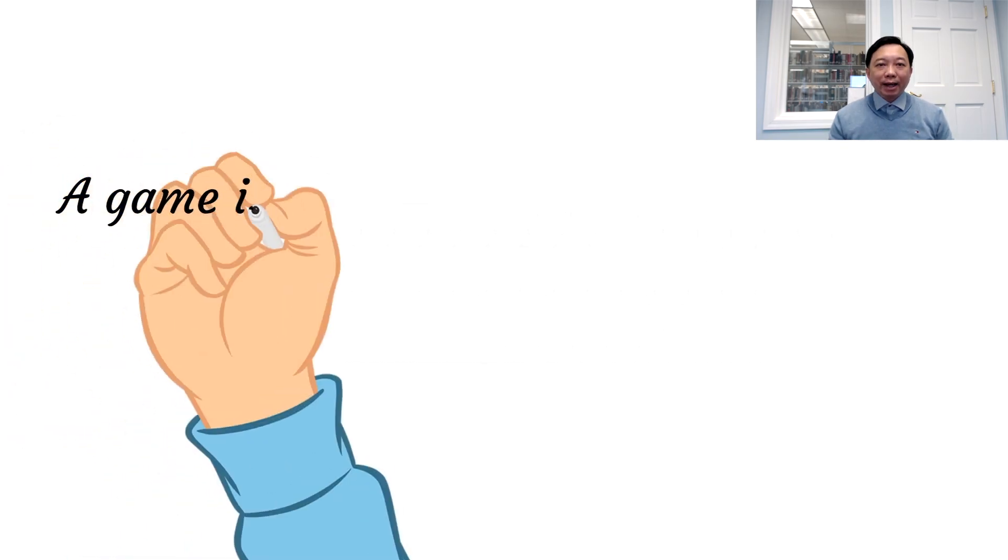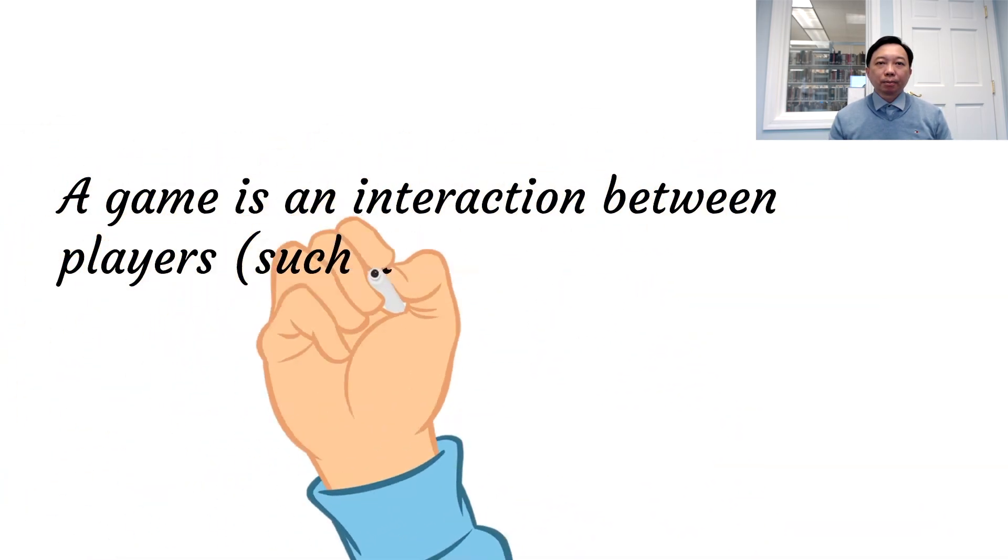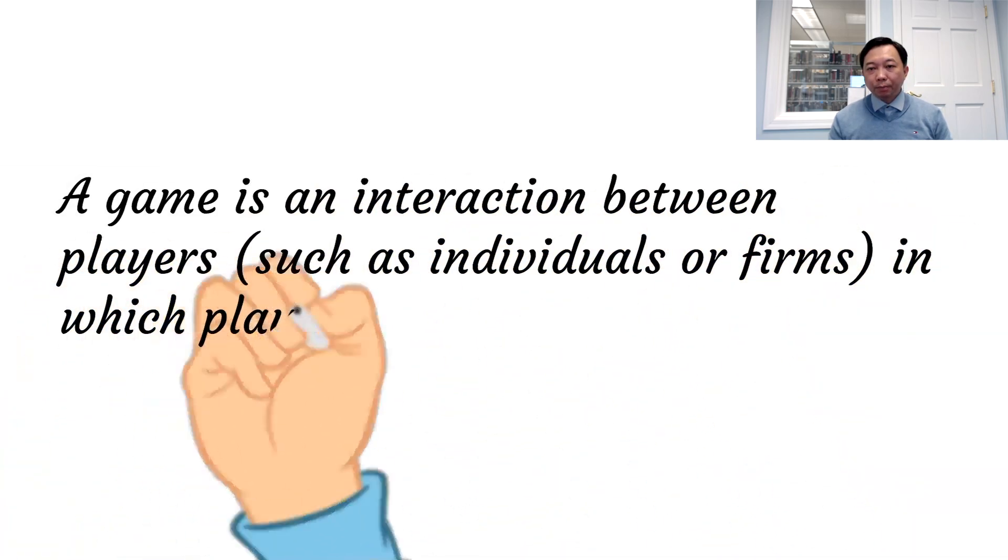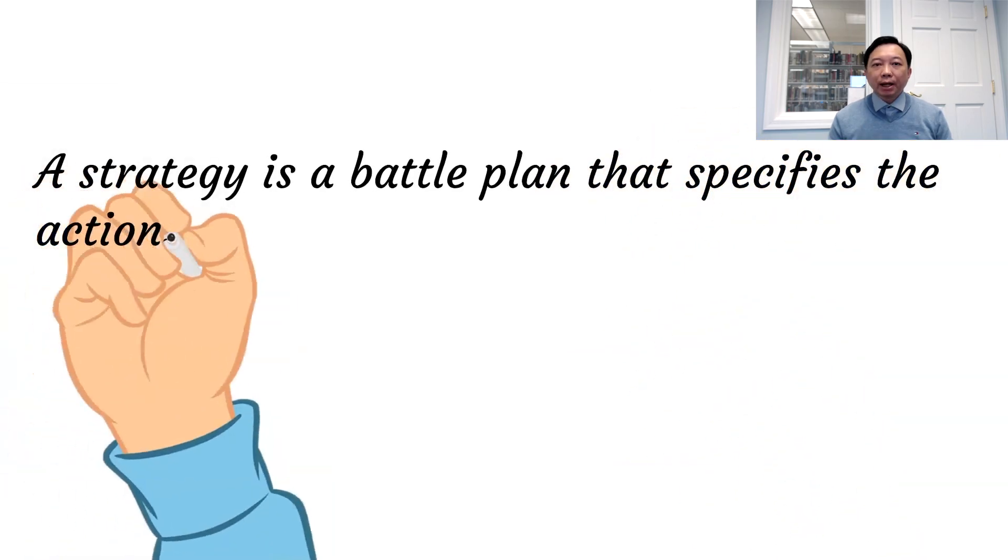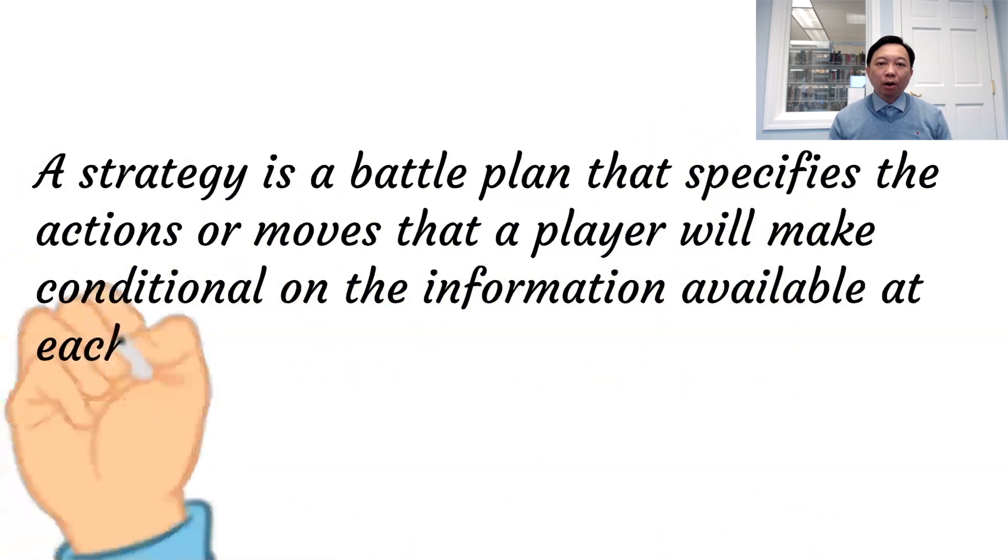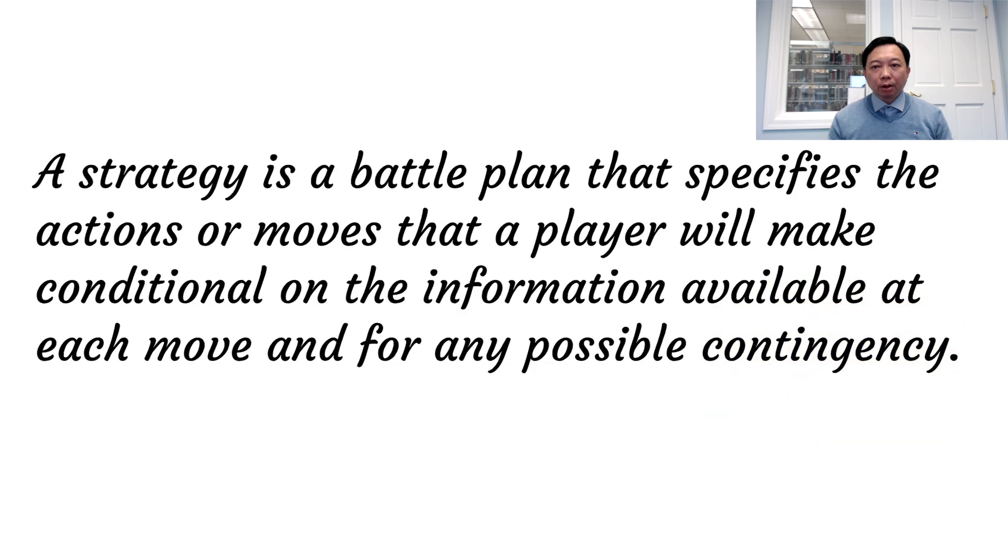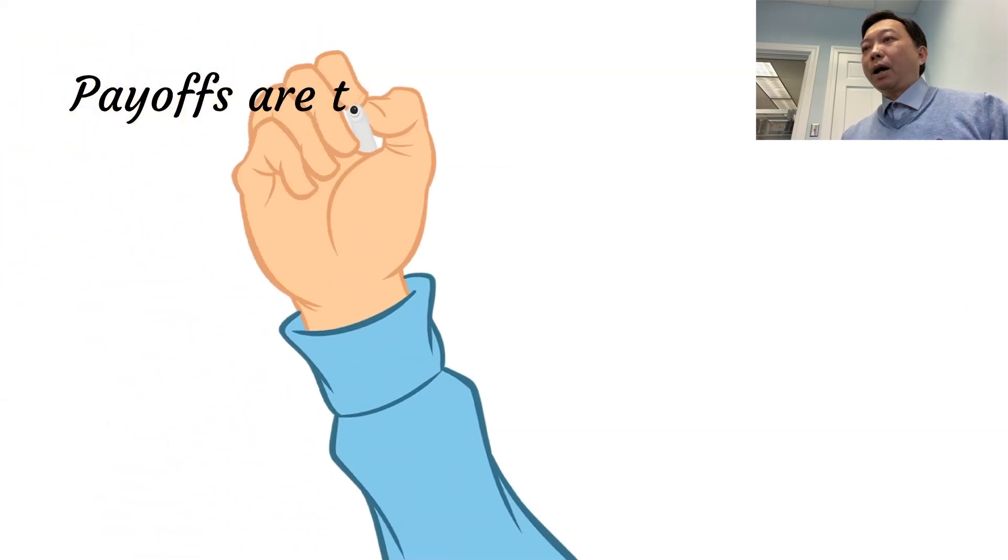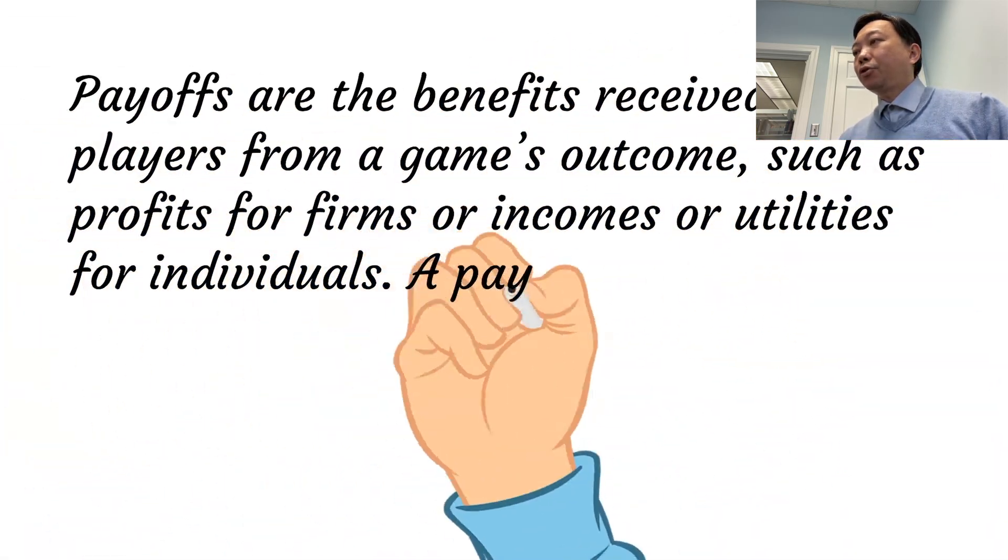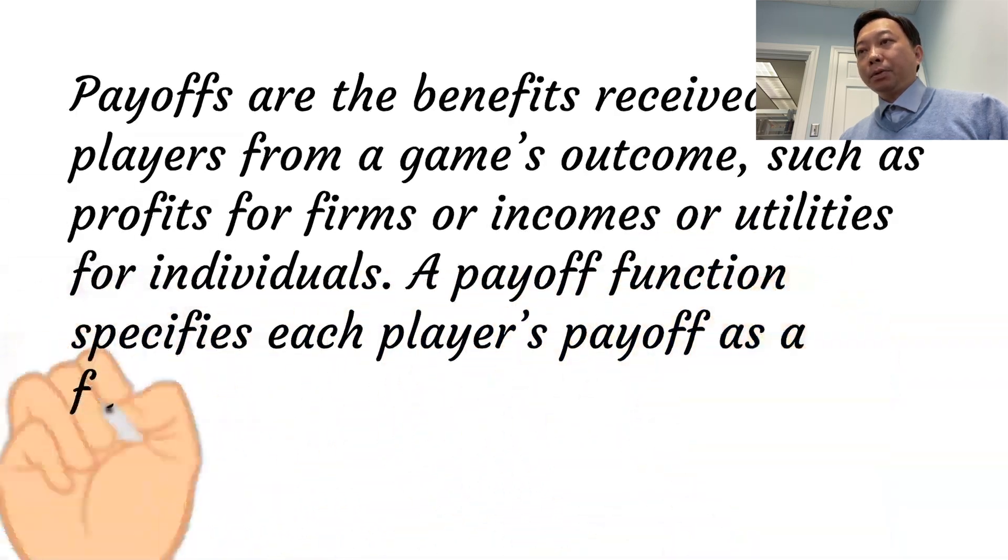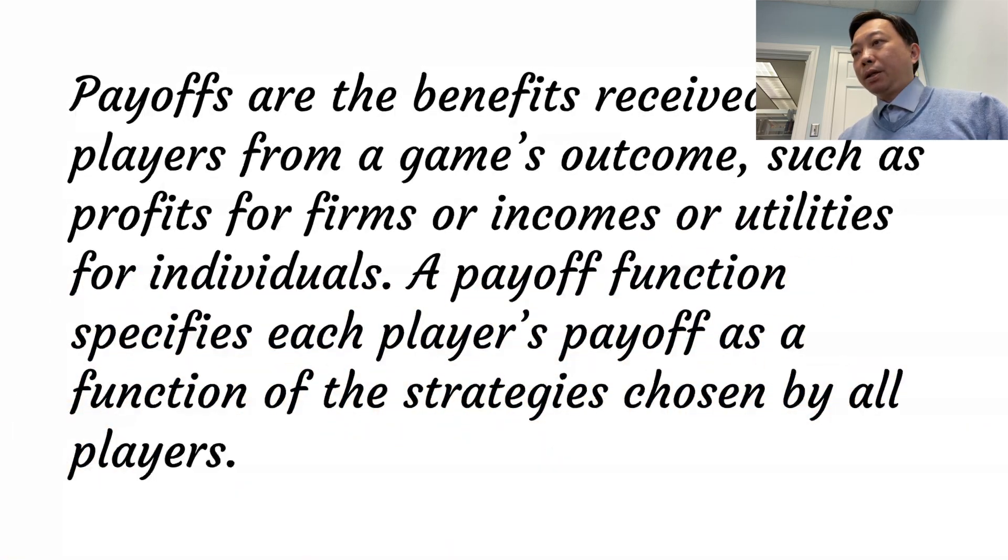A game is an interaction between players, such as individuals or firms, in which players use strategies. A strategy is a plan that specifies the actions or moves that a player will make, conditional on the information available, and for any possible contingency. Payoffs are the benefits received by players from a game's outcome, such as profits for firms and incomes or utilities for individuals.